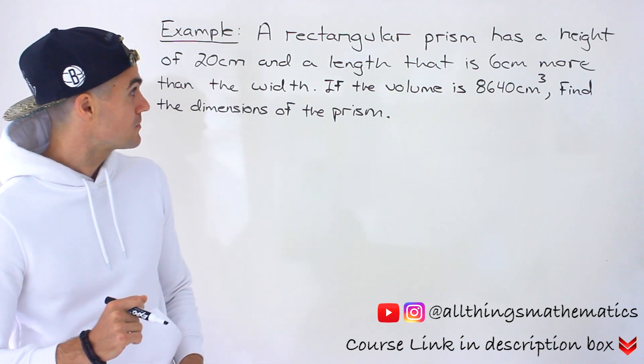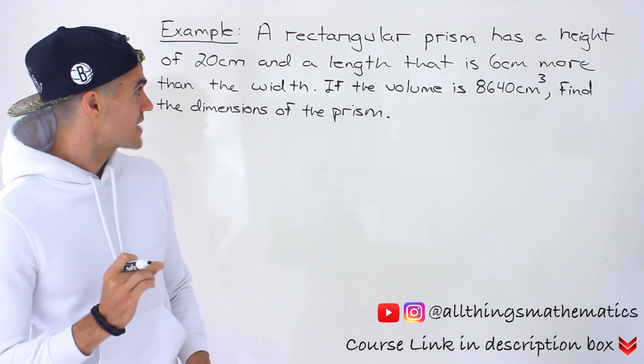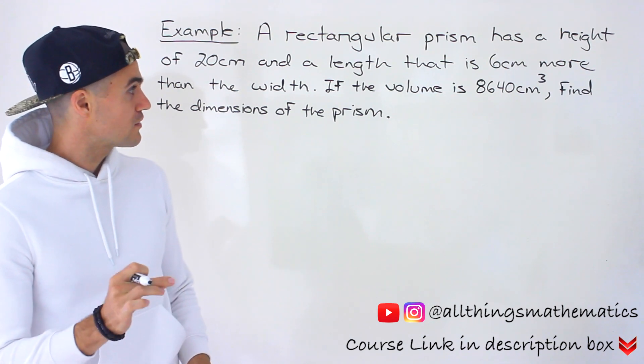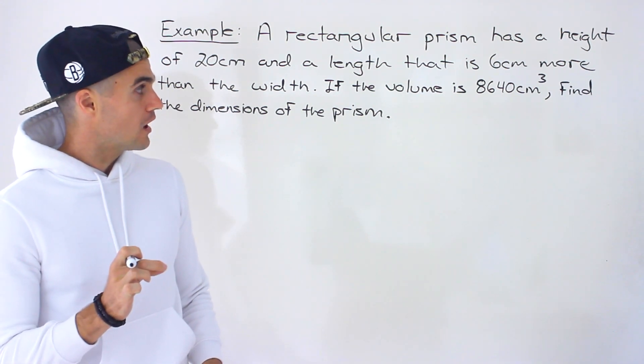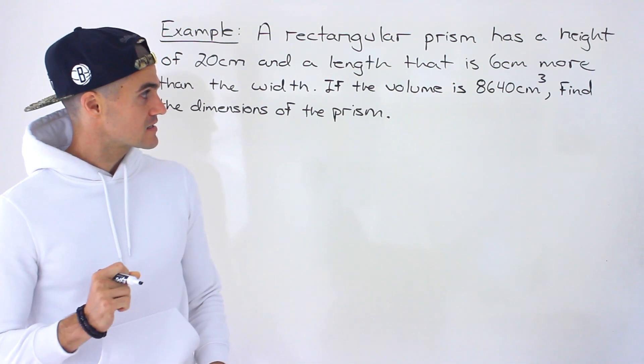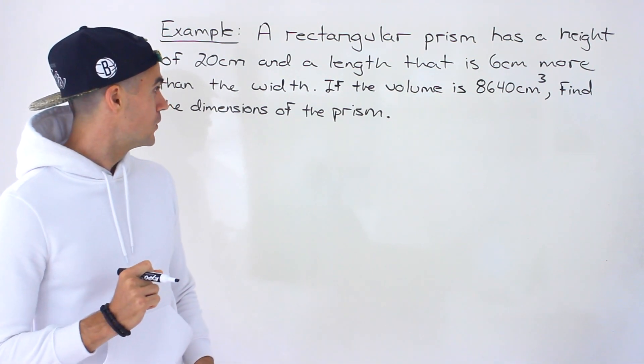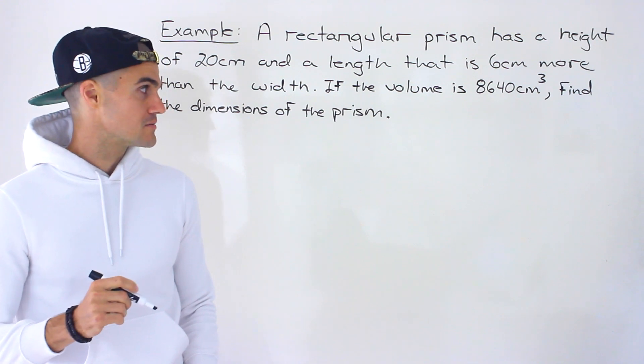We're told a rectangular prism has a height of 20 centimeters and a length that is 6 centimeters more than the width. If the volume of the prism is 8640 centimeters cubed, we have to find the dimensions of the prism.